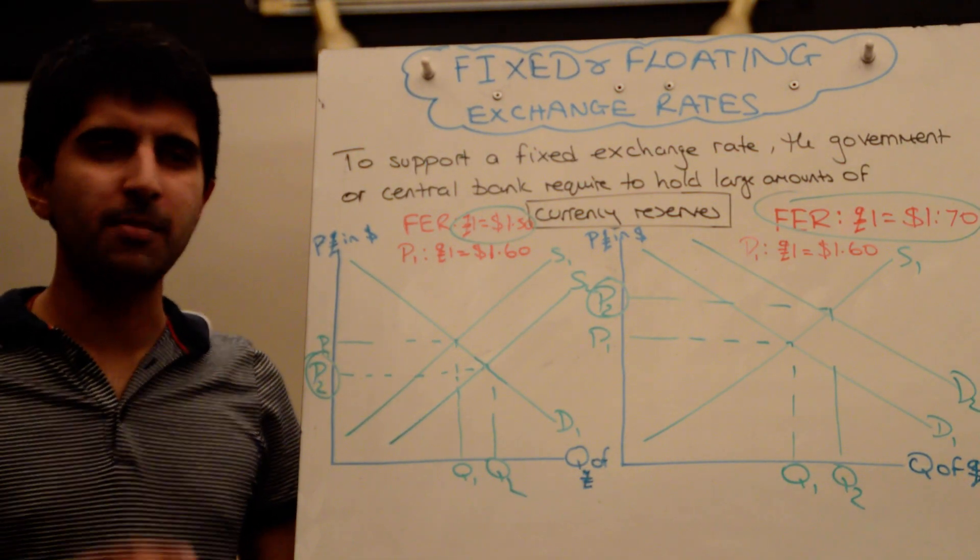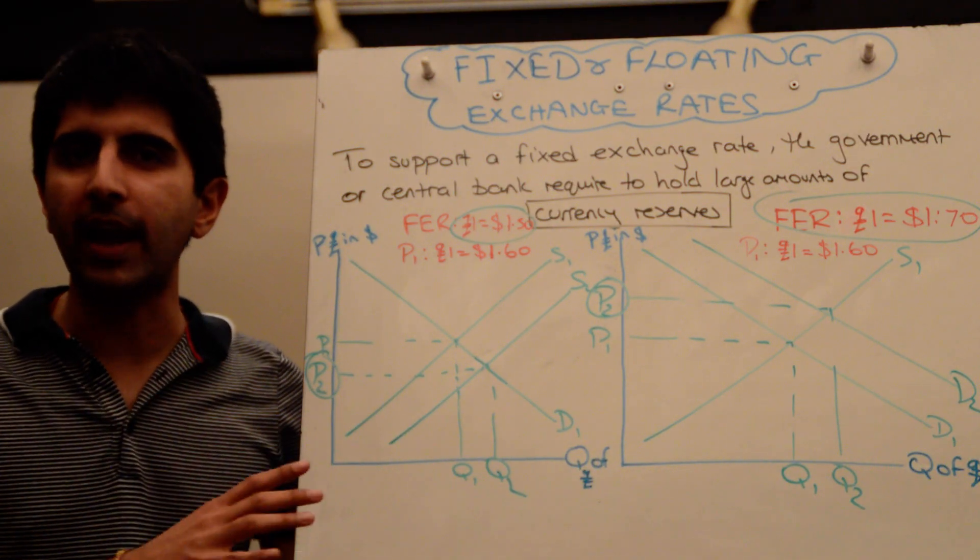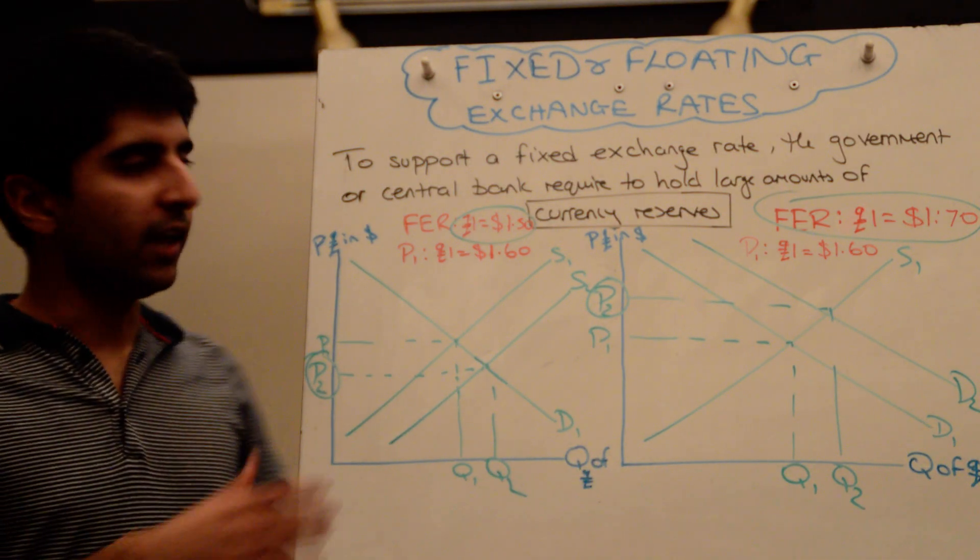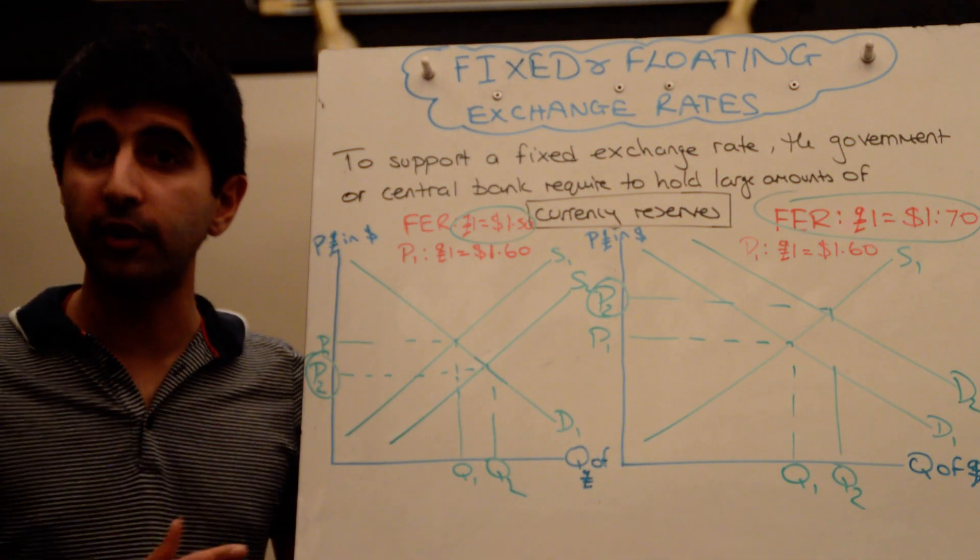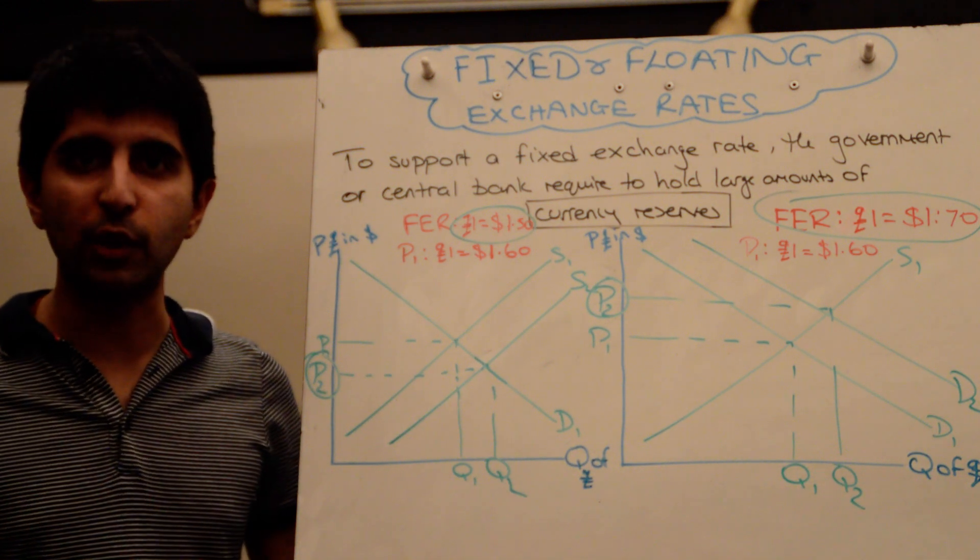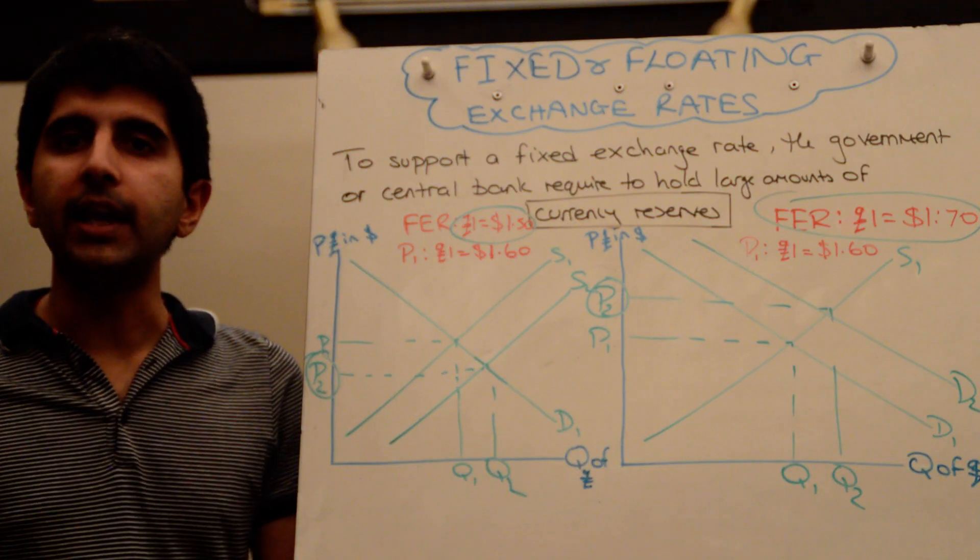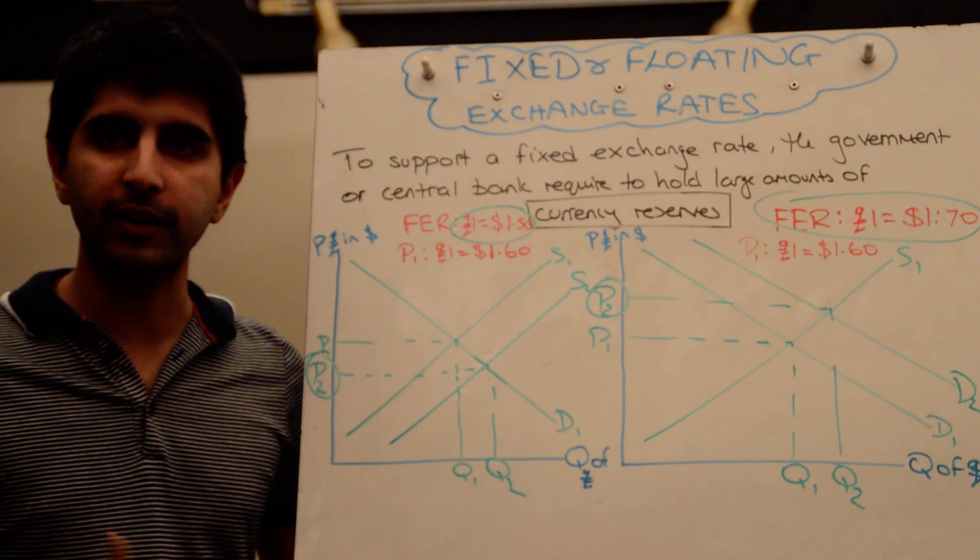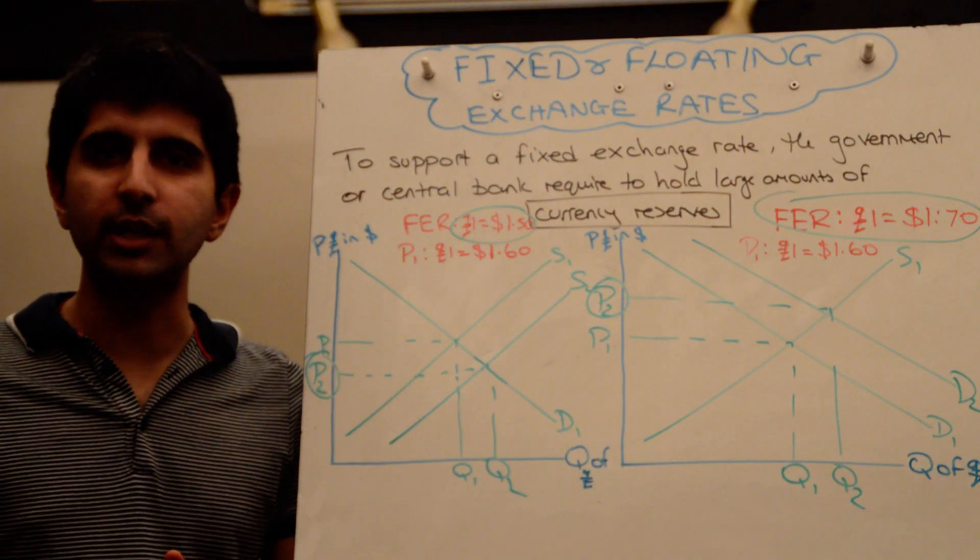In theory, another way to maintain an exchange rate is to actually manipulate interest rates, but that's not as direct. So, in theory, if a central bank or government wanted to reduce the value of an exchange rate, they could lower interest rates, which would increase supply of the currency and reduce the value of it. And if they wanted to increase the value of the exchange rate, it could simply increase interest rates, increasing demand for the currency.